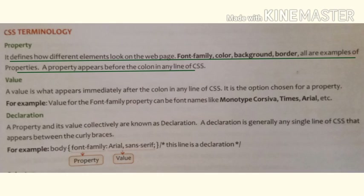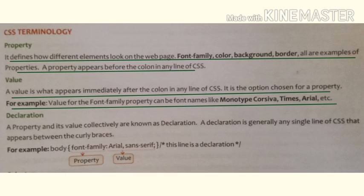The next term is value. A value is what appears immediately after the colon in any line of CSS. It is the option chosen for a property. For example, the value for the font-family property can be font names like Monotype, Times, Arial, etc.